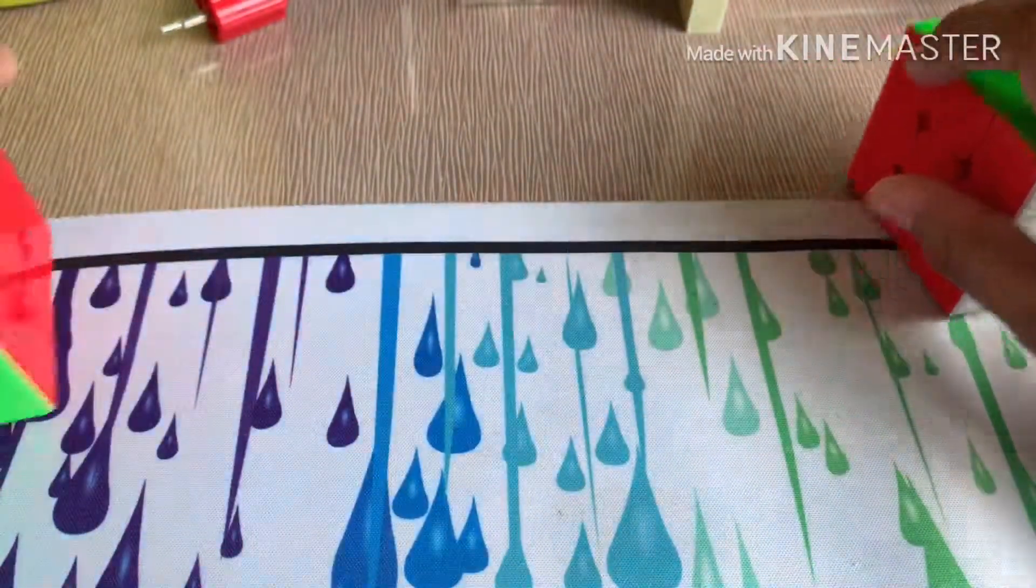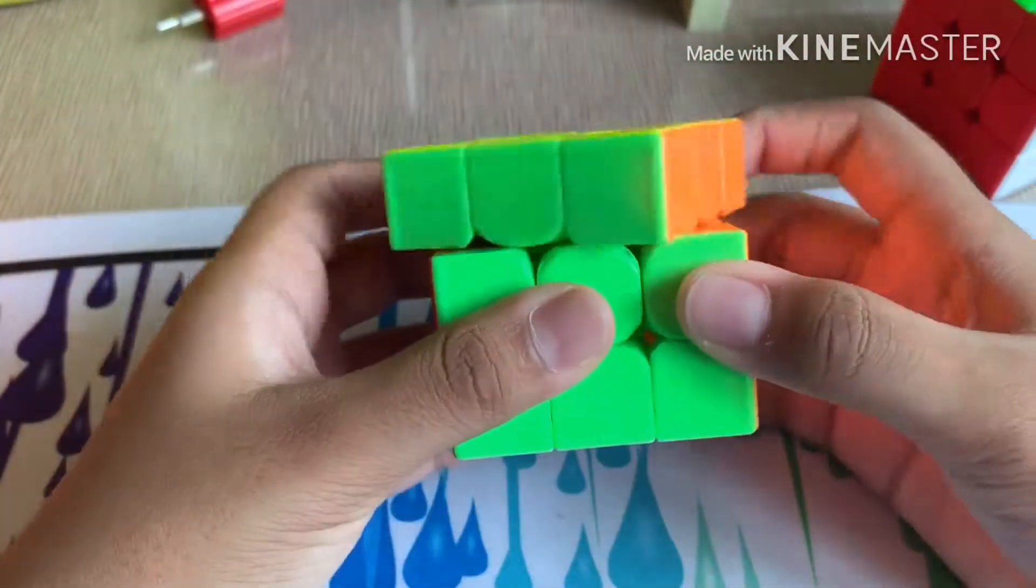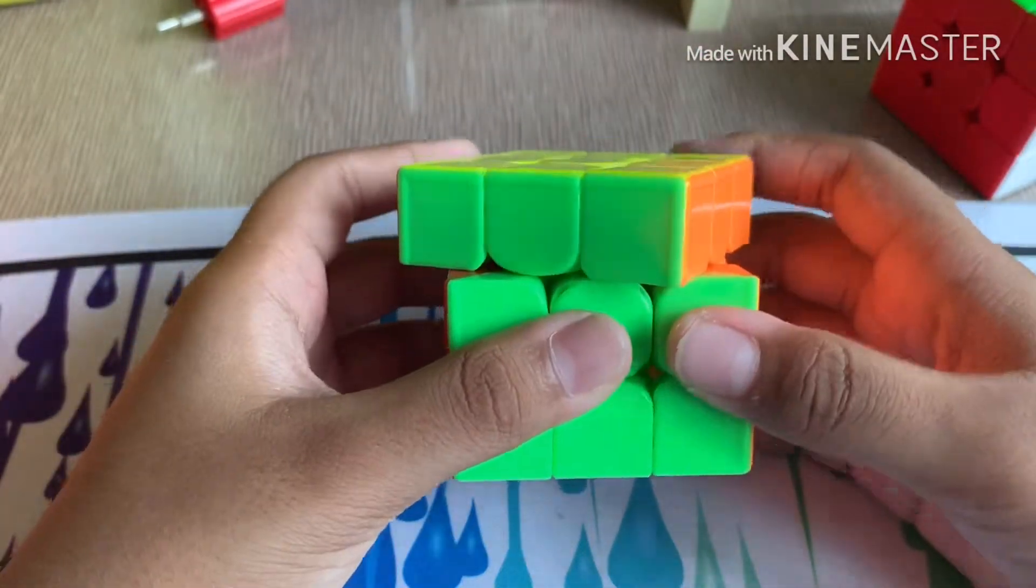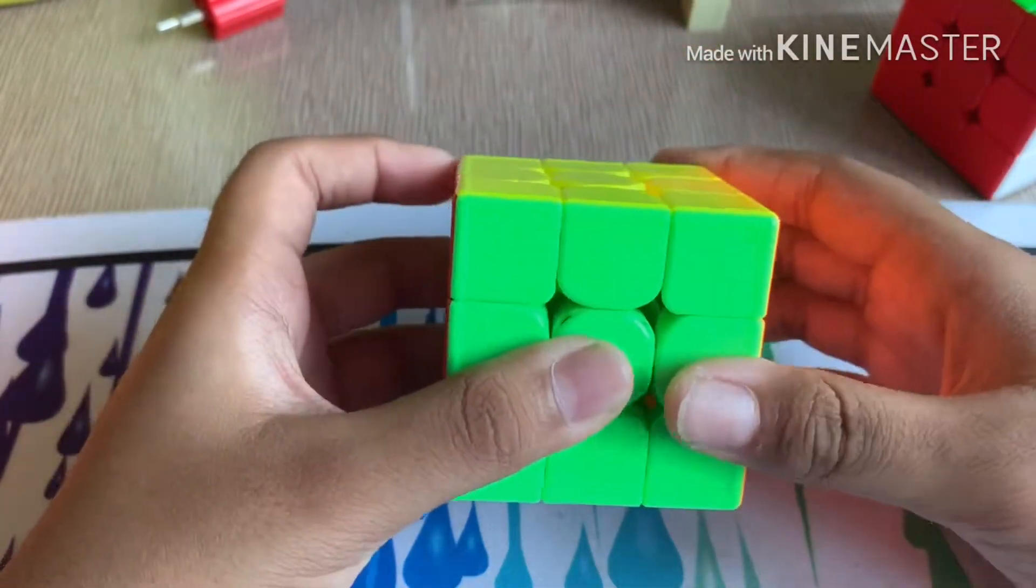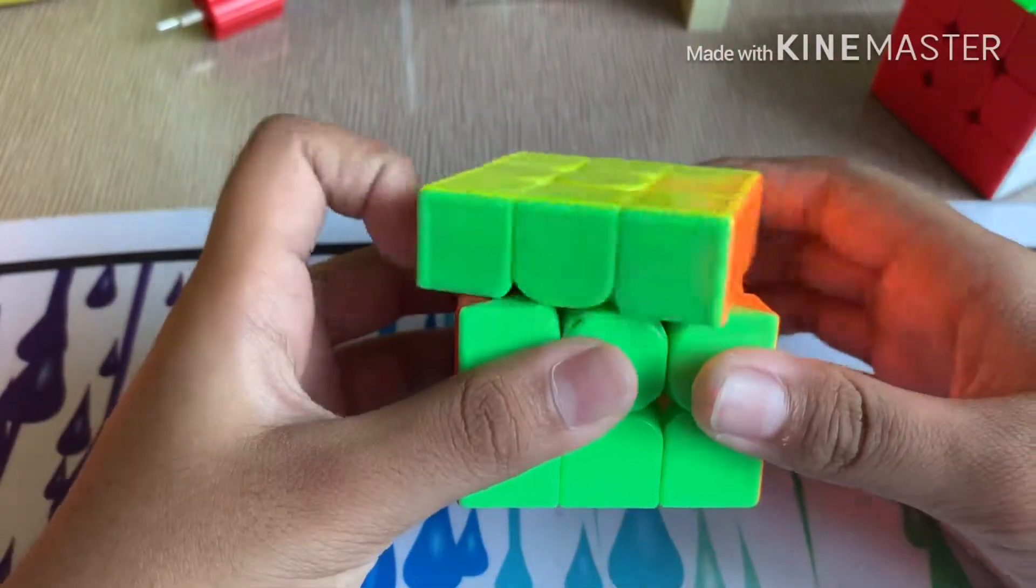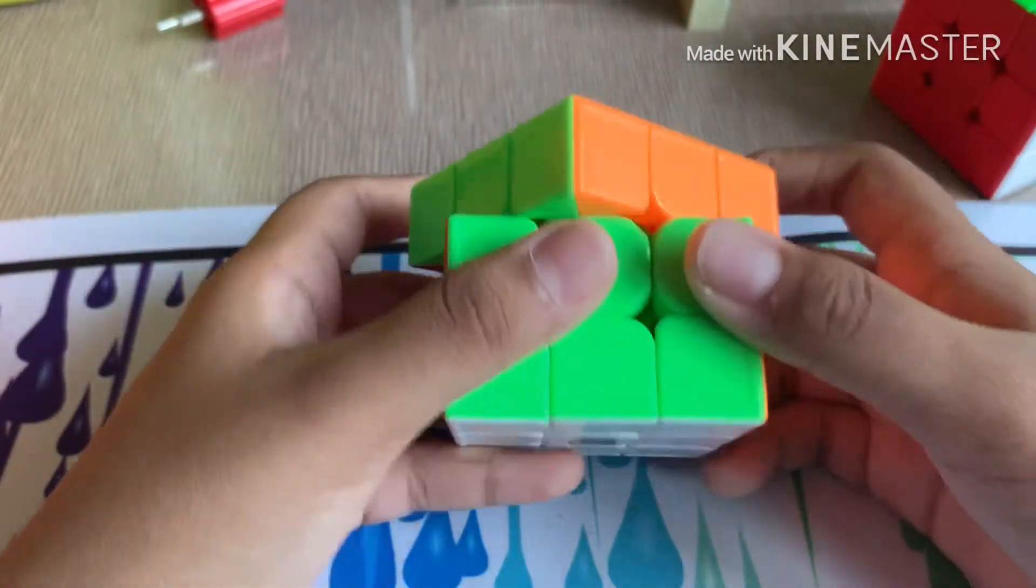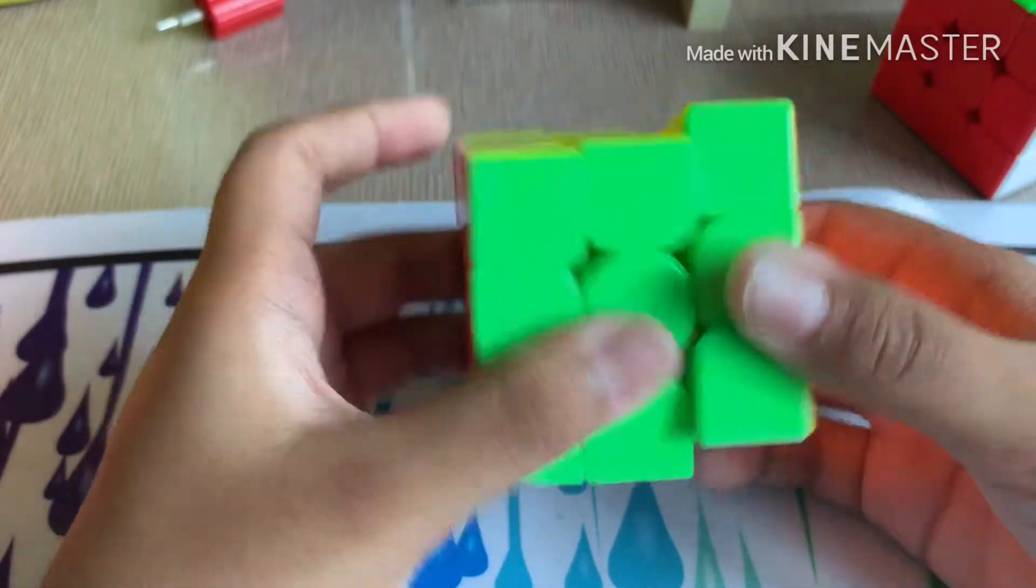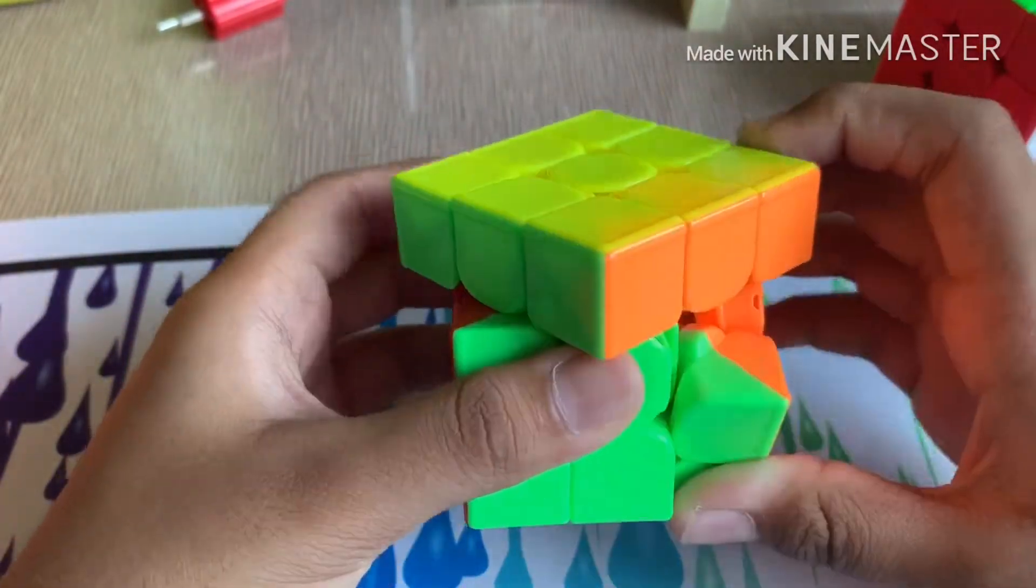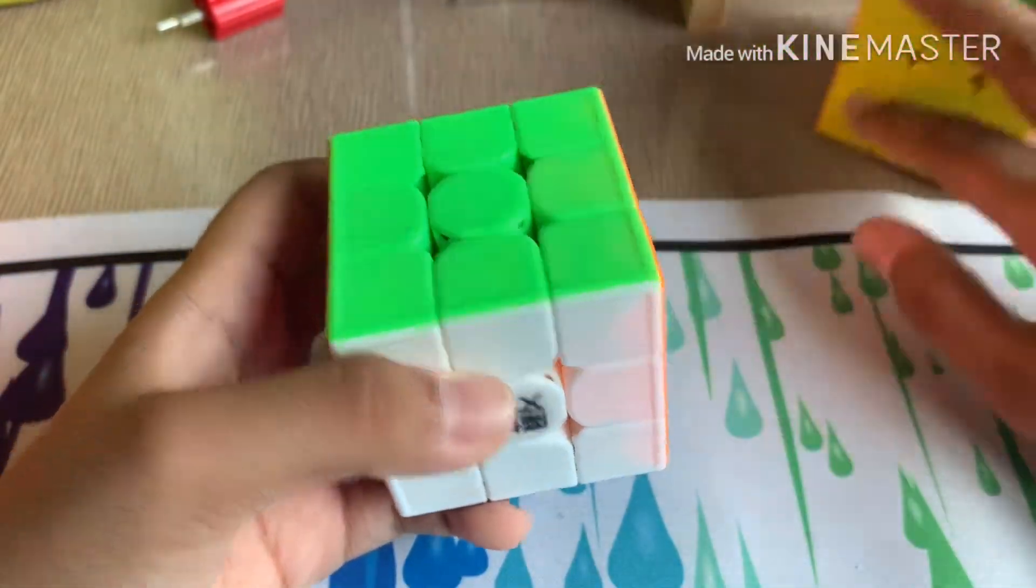So the Weilong GTS 3M now, the corner cutting is as good as the Yulong. Yulong reverse corner cutting is really weird, it feels weird. This one takes a bit of effort, over 45 degrees it takes a bit of effort. Reverse is as meh as this.